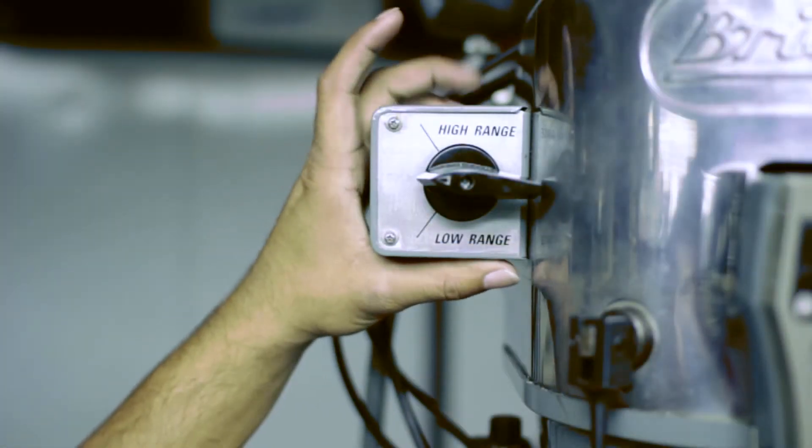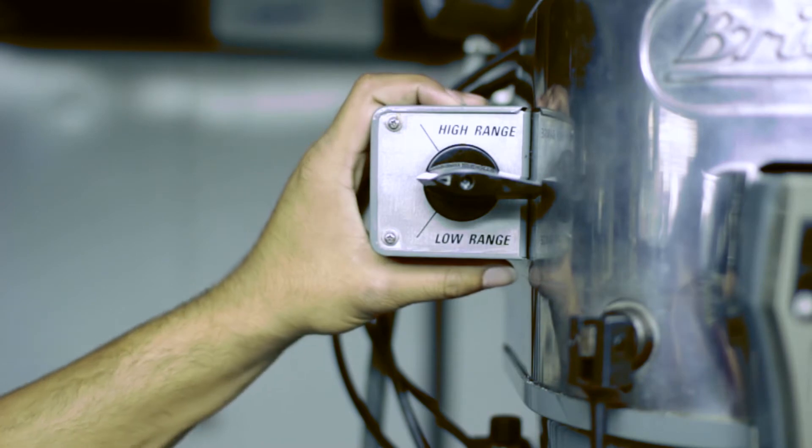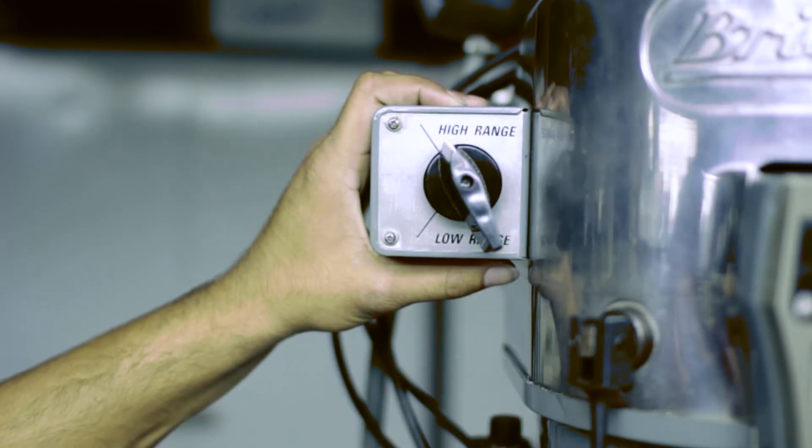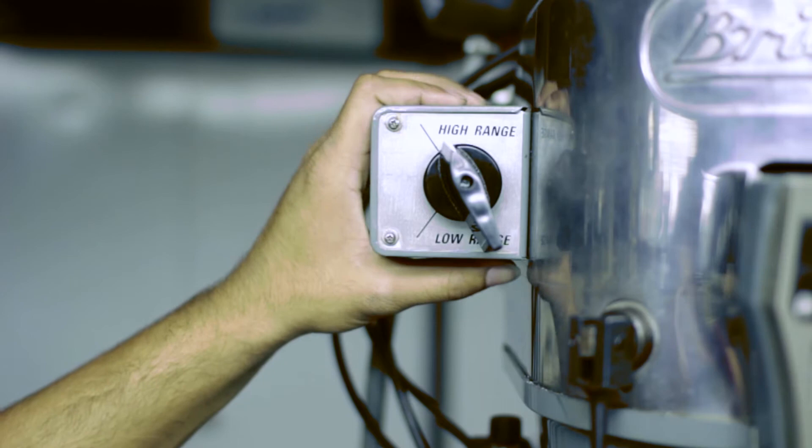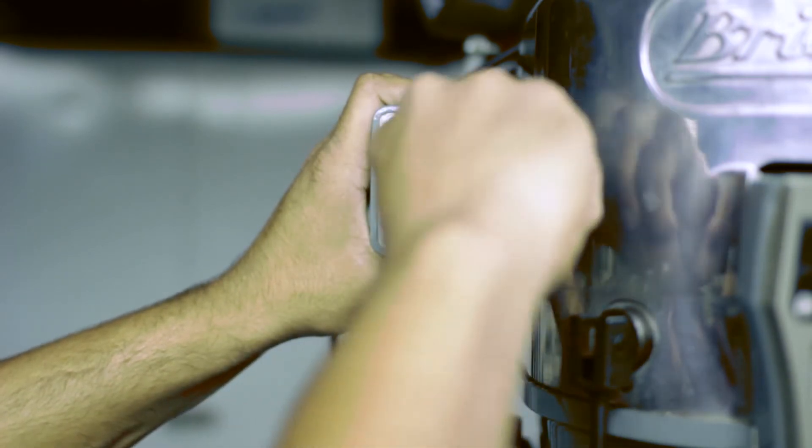Now that we checked the gear, we can turn the machine on to high range. And to shut it off, just go back to the middle area.